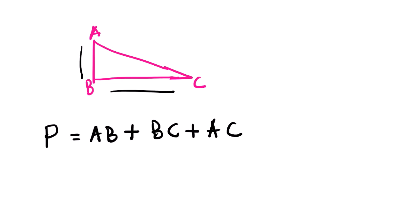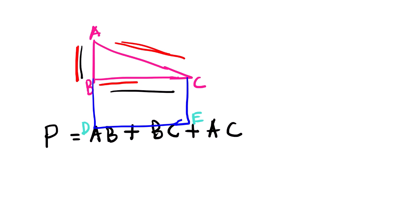Let's say we have a triangle shape on top of a rectangle shape, and we want to find the perimeter of the combined diagram. When it comes to the perimeter of the triangle in this case, we only include the outer sides — not the inner shared side. Remember that the perimeter consists of the outer sides of the diagram, so it will be this side plus this side plus the sides of the rectangle.